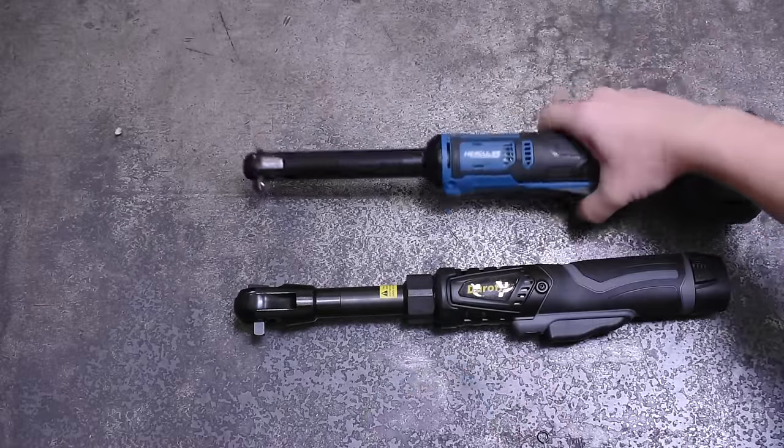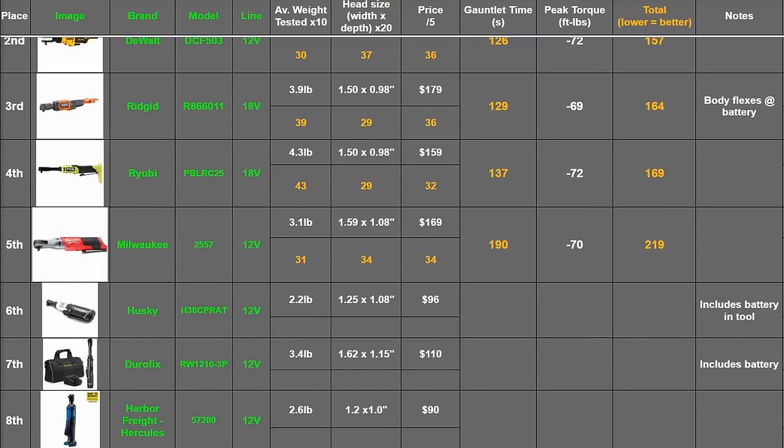So we can already score the first half of our leaderboard now. That's going to include weight here, which is 22 points for the 2.2 pound Husky, then 34 for the Durofix, 26, and 26 for the Hercules as tested. Remember, more points are worse on this ranking. Then for head size, the Durofix head is much bigger than the rest. That's 27, 37, and 24 points.